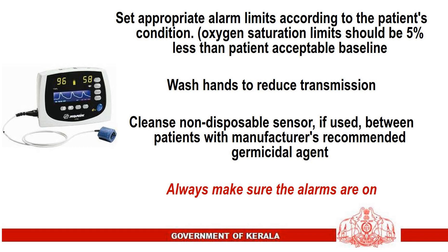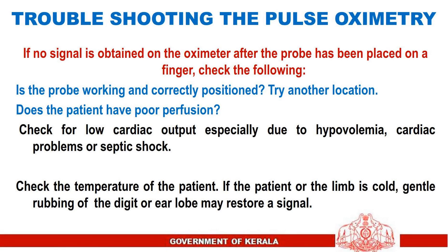Always make sure that the alarms are on. Troubleshooting: if no signal is obtained after the probe has been placed on a finger, check the following — is the probe working correctly? The patient may have poor perfusion; check for low cardiac output especially due to hypovolemia, cardiac problems, or septic shock. Check the temperature of the patient — if the patient or the limb is cold, gentle rubbing of the digital lobe may restore a signal.